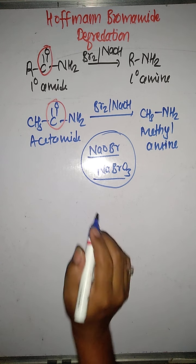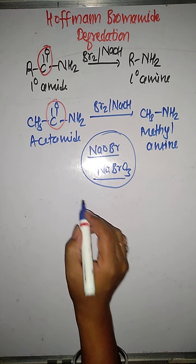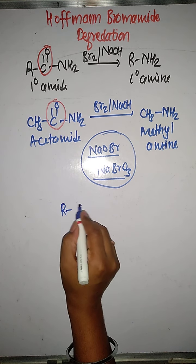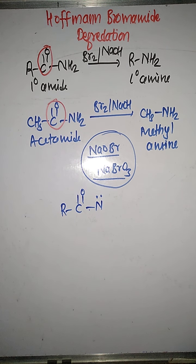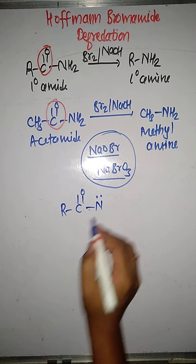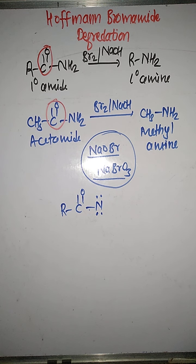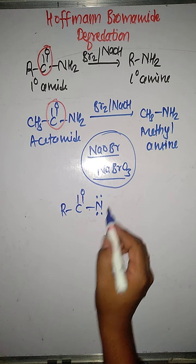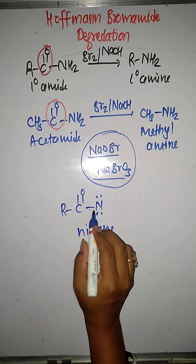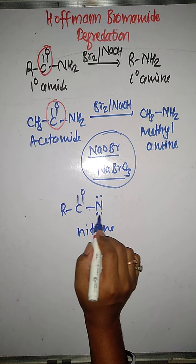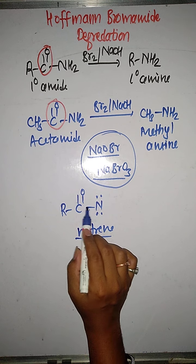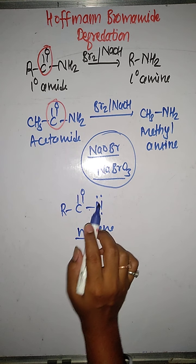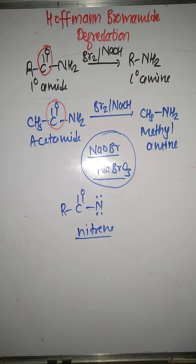This reaction is believed to proceed via the formation of an acyl nitrene. Acyl nitrene is a kind of intermediate produced in Hoffman Bromamide degradation. Nitrenes are monovalent nitrogen species containing two lone pairs of electrons.